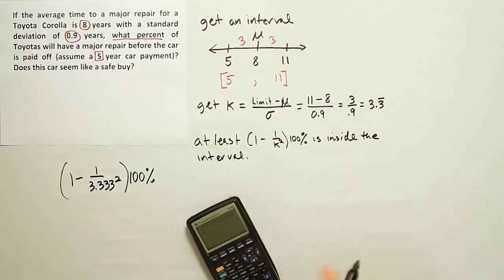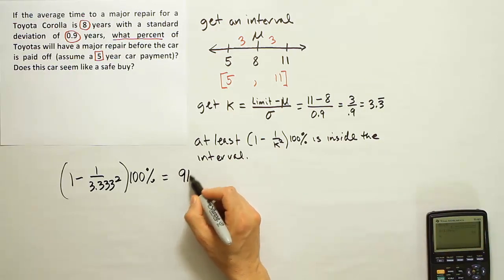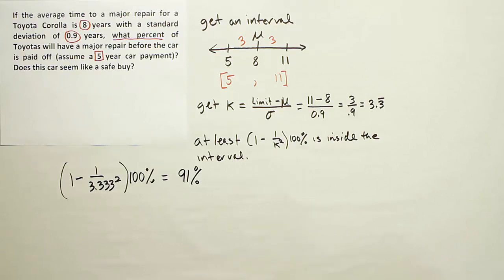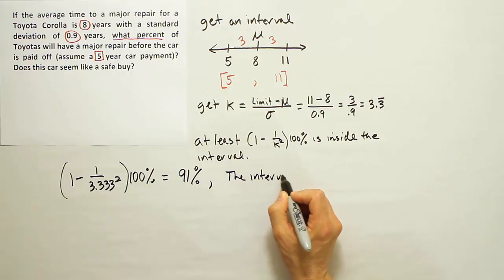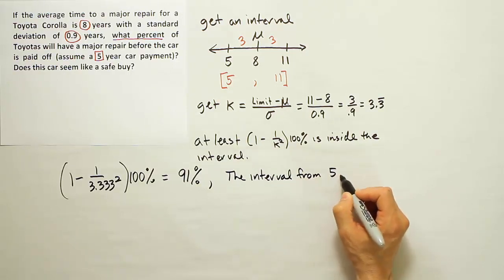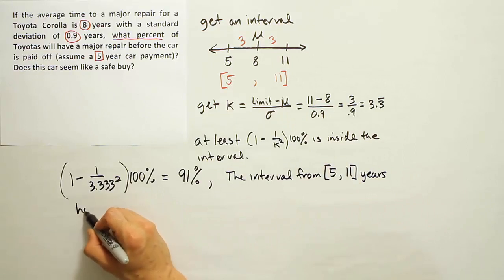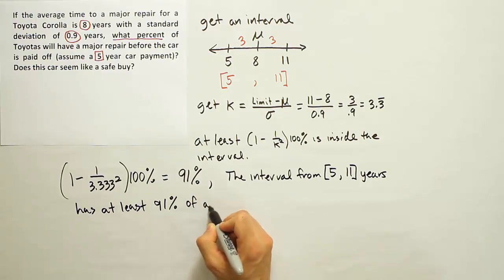Alright, so I'm going to work that out in my calculator. Not rounding at all. So 1 minus 1 divided by 3.3 repeating squared. That's going to give us precisely 91%. Again, I get precisely 91% because I didn't round my k at all. If you round it, you'll get something that will round up to 91%.